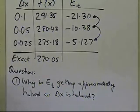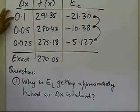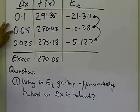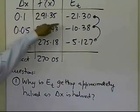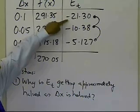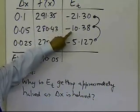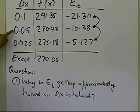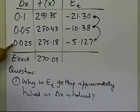What I mean by that is that if you look at delta x is 0.1, you are making delta x here to be half of what it was before, but look at the true error, it's 21.30, and now it is approximately half of that.